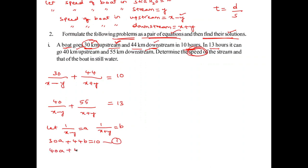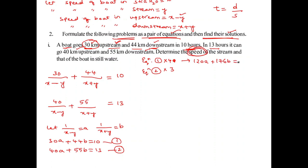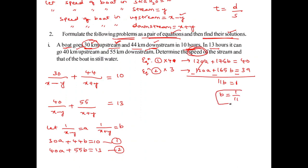Multiplying equation 1 by 4 and equation 2 by 3, then subtracting: A cancels, giving 11B equals 1, so B equals 1 by 11. Substituting B into equation 1: 30A plus 44 times 1 by 11 equals 10. This gives 30A equals 6, so A equals 1 by 5.